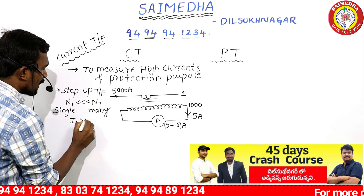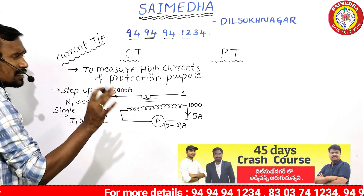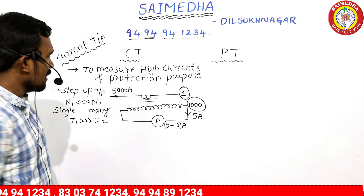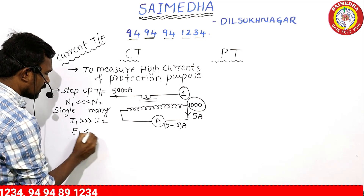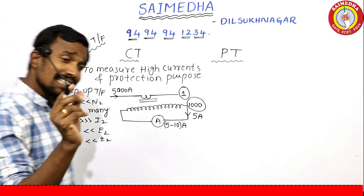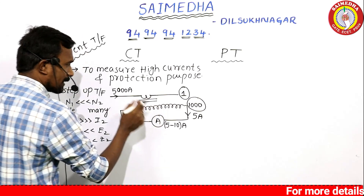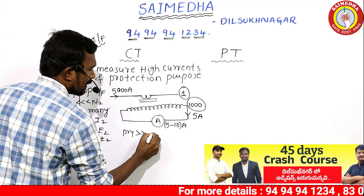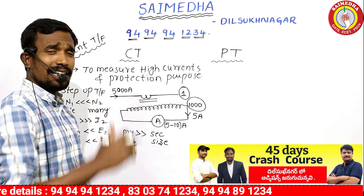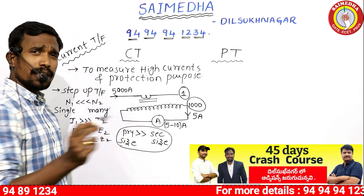The primary current I1 is very high, but the secondary current I2 is very low. The CT is a step-up transformer: primary has a single turn, secondary has many turns. So E2 is greater than E1, and Z2 is greater than Z1. The conductor size of the primary must be larger, as it carries high current, while the secondary conductor is smaller.